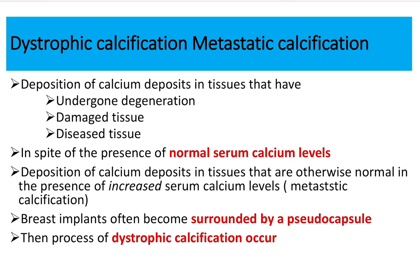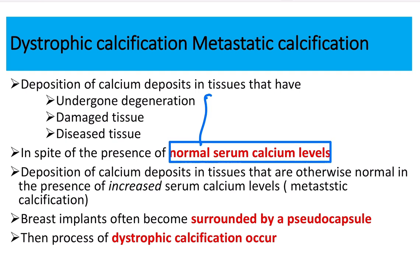Let's compare dystrophic and metastatic calcification. Dystrophic calcification is the deposition of calcium in tissue that has undergone degeneration, damage, or disease — in spite of a normal serum calcium level. Remember the mnemonic D4D: dystrophic calcification occurs in dead tissue, and serum calcium is normal.